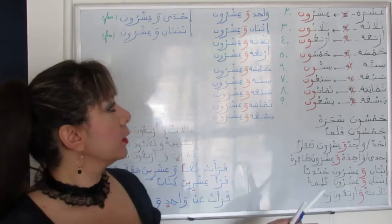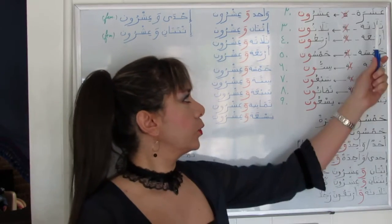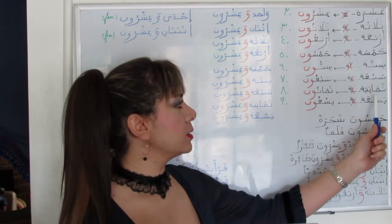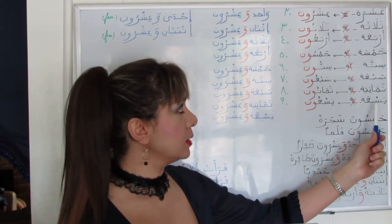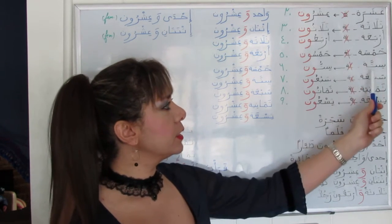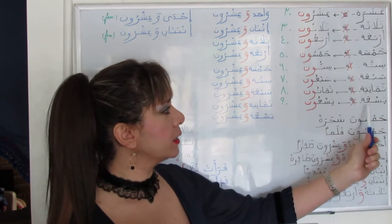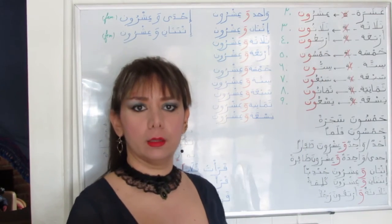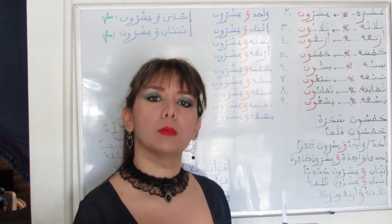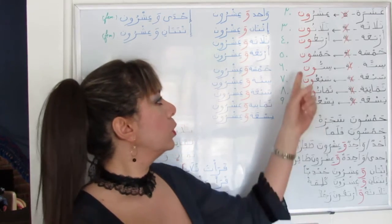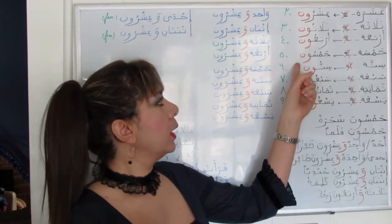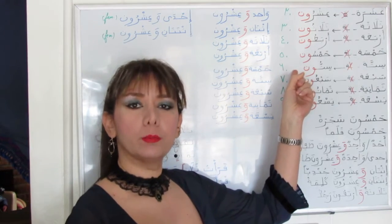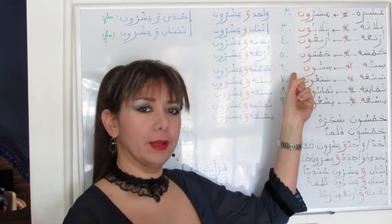So for ثلاثة (three), أربعة (four), خمسة (five), ستة (six), سبعة (seven), ثمانية (eight), تسعة (nine) — they will all get rid of their تا مربوطة to have the suffix ون preceded by ضمّة.